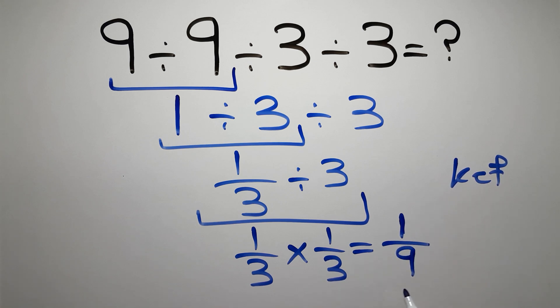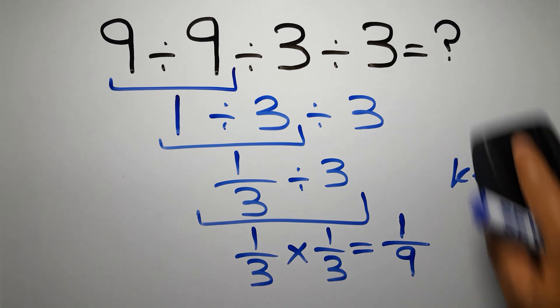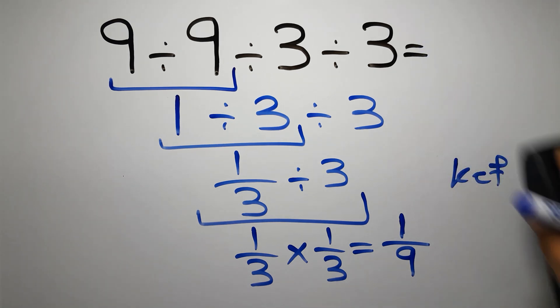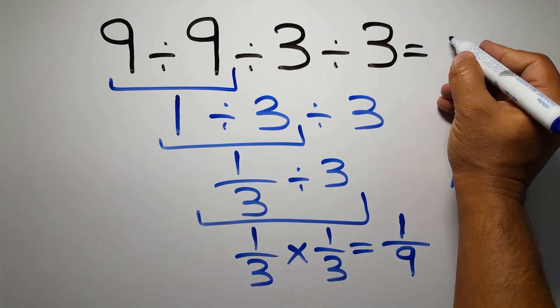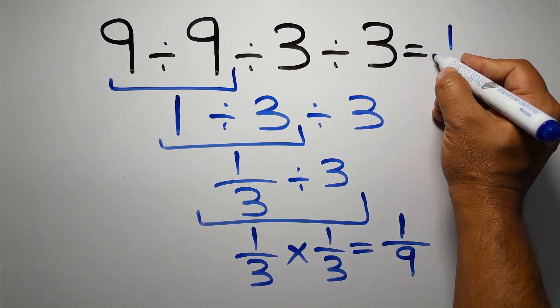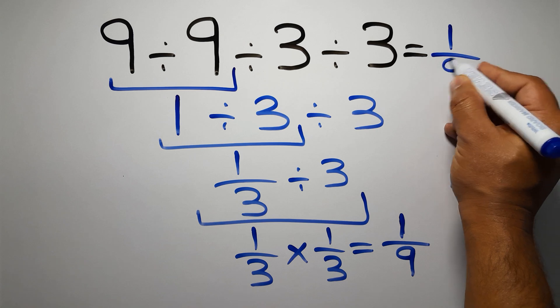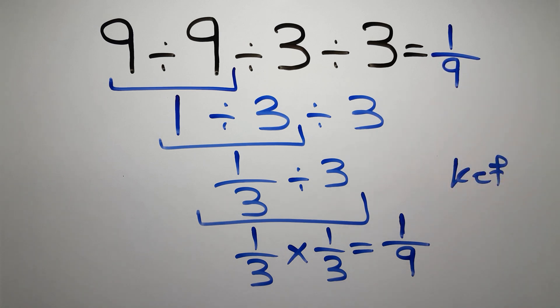So 1 over 9 is our final answer to this problem. The correct answer is 1 over 9.